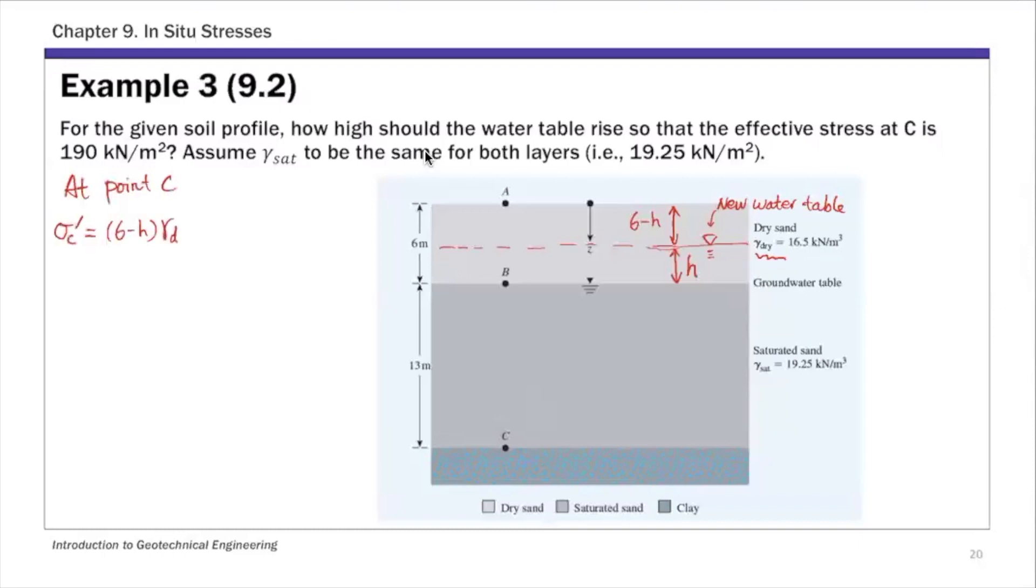That's 6 minus H dry soil above the new water table, plus H plus 13. That's the depth, the thickness of the new saturated soil after the water table rises. H plus 13 times the buoyant unit weight.